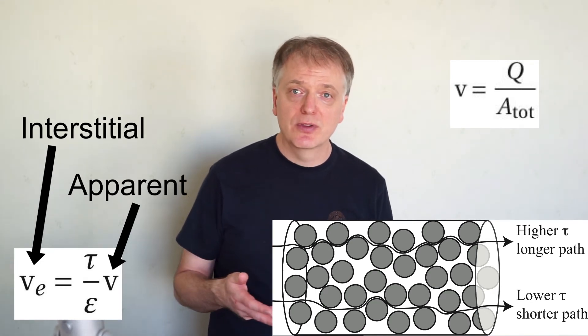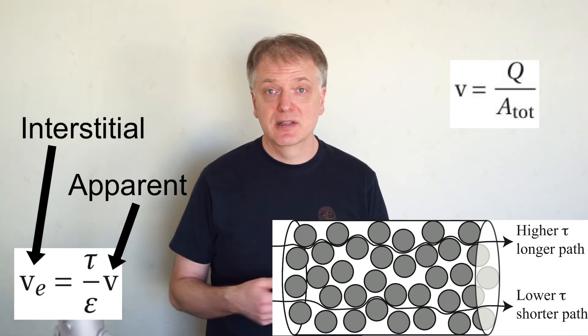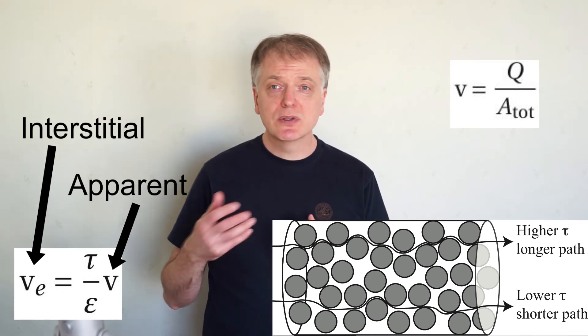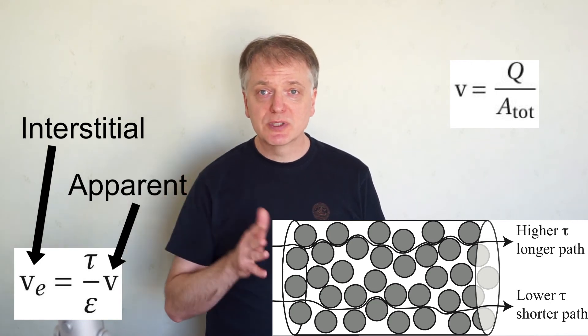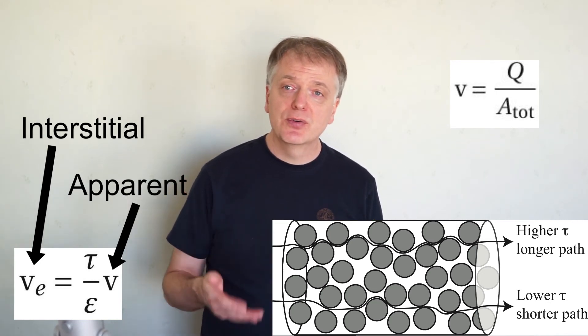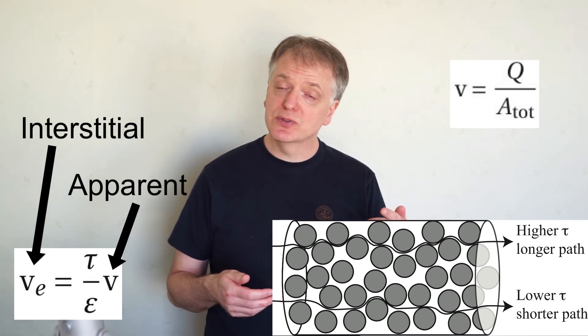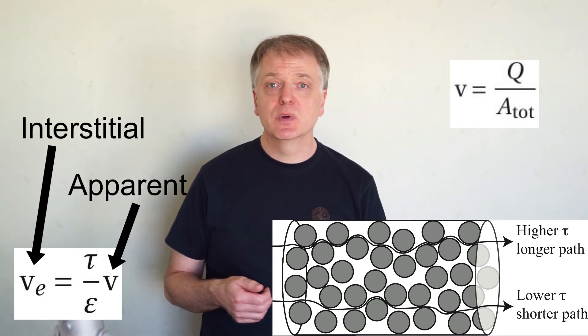The real velocity through the void volume is higher than the apparent velocity and depends on the porosity, but also on the tortuosity of the flow channels. Thus the real velocity is the apparent velocity multiplied by the tortuosity and then divided by the porosity.